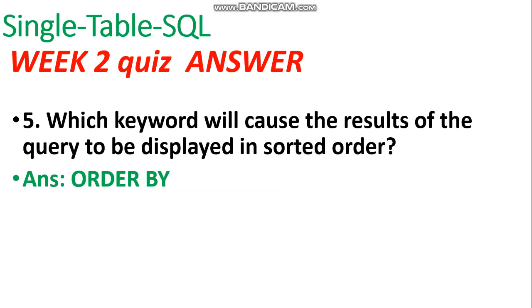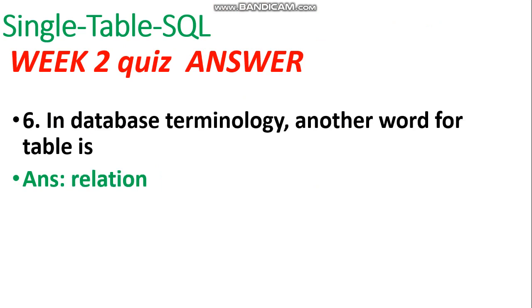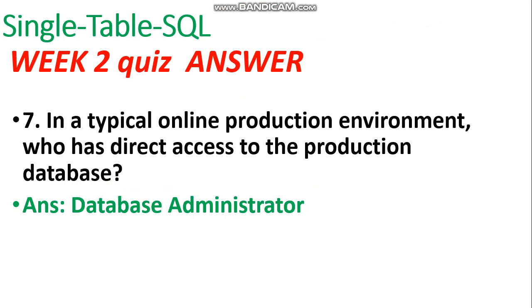The fourth answer is SELECT * FROM users. The fifth question — which keyword will cause the result of the query to be displayed in sorted order — the answer is ORDER BY. The sixth answer: in database terminology, another word for table is relation.